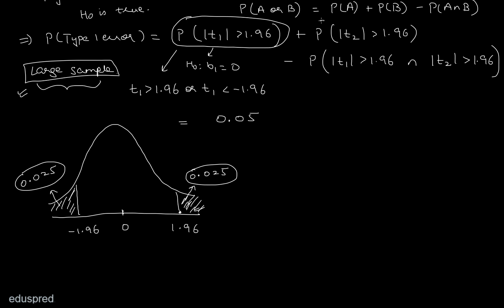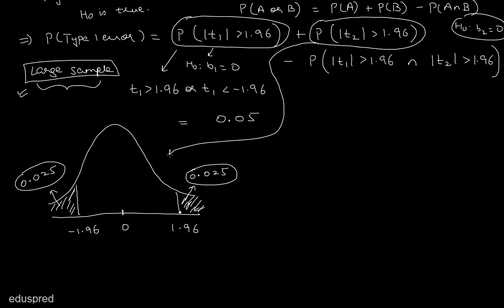Similarly, let's find P(|t2| > 1.96). Since t2 corresponds to the null that b2 equal to 0, and we use the same large-sample standard normal reasoning, this probability is also equal to 0.05. So P(|t1| > 1.96) = 0.05 and P(|t2| > 1.96) = 0.05.